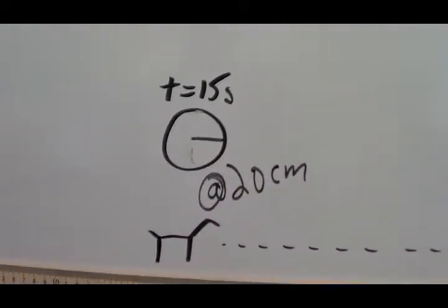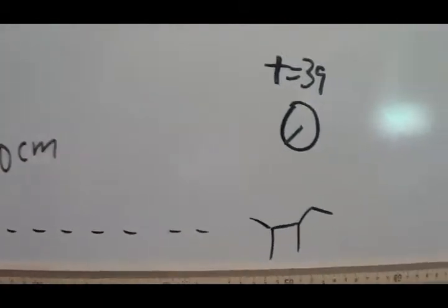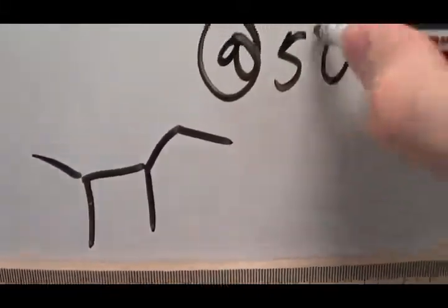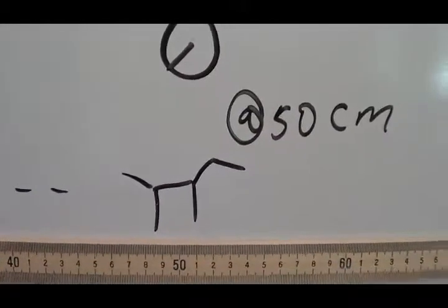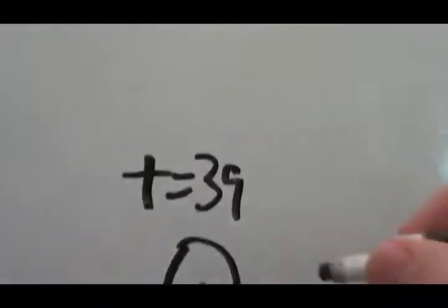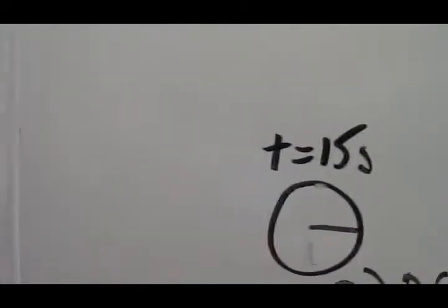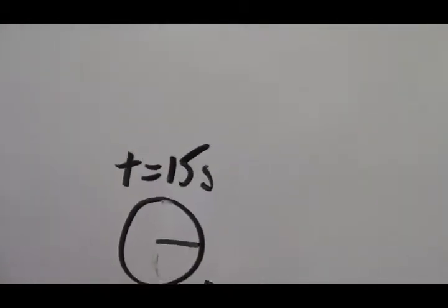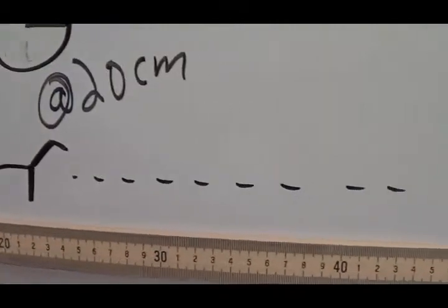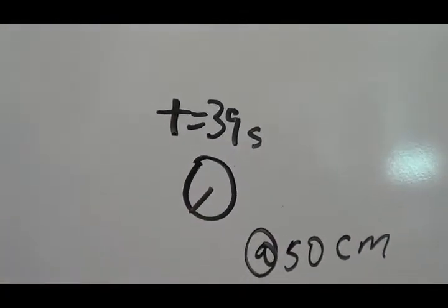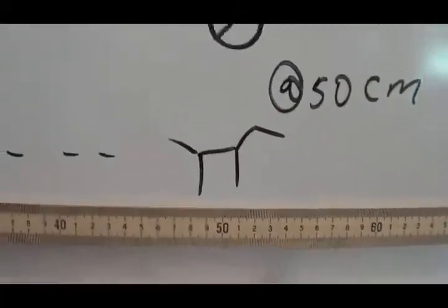Now, this dog slowly walks across my board until he gets over here to the 50 centimeter mark. He's at the 50 centimeter mark. At this point, he gets there at the time of 39 seconds. We're kind of using like a stopwatch time. At some point someone started the stopwatch, once it said 15 seconds, boom! This dog starts walking across my board, and once it reads T equals 39 seconds, that's when he is at this location right here.